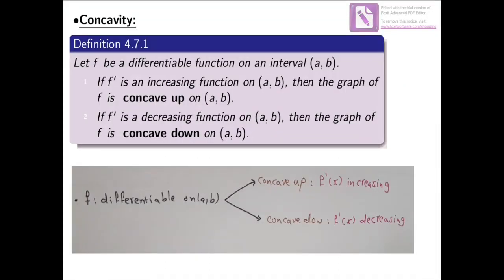First, let us define what we mean by concavity. Definition 4.7.1: Let f be a differentiable function on an interval (a, b). If f' is an increasing function on the interval (a, b), then the graph of f is concave up on the open interval (a, b). And if f' is a decreasing function on the open interval (a, b), then the graph of f is concave down on the open interval (a, b). So here we have two types of concavity: concave up and concave down.